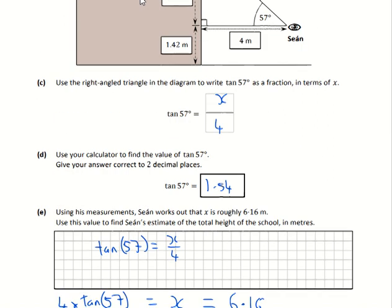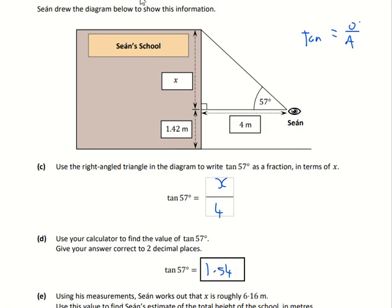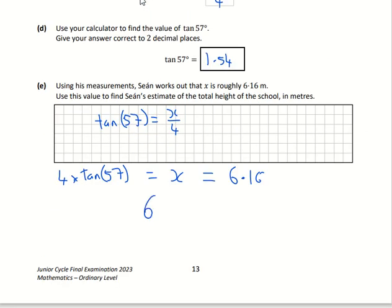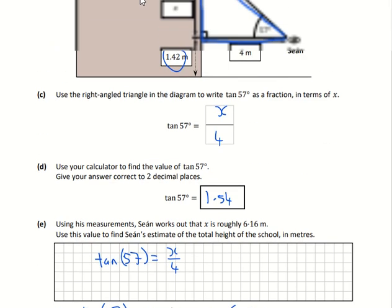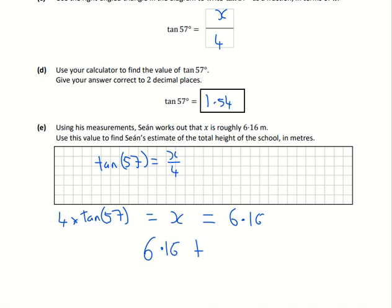Then they ask us to give the total height of the school. x is 6.16, so we know that that part there is 6.16. We have to add it to the 1.42. By adding those two together, it gives us the height of the whole thing. So 6.16 plus 1.42, and we should get 7.58.